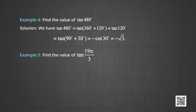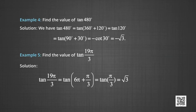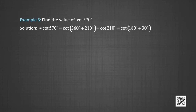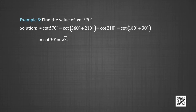In example 5, we find the value of tan(19π/3). tan(19π/3) = tan(6π + π/3). Since 6π completes 3 revolutions, this equals tan(π/3) = √3. In example 6, we find the value of cot(570°). cot(570°) = cot(360° + 210°) = cot(210°) = cot(180° + 30°) = cot(30°) = √3.